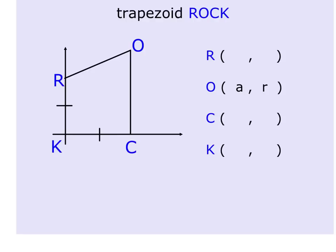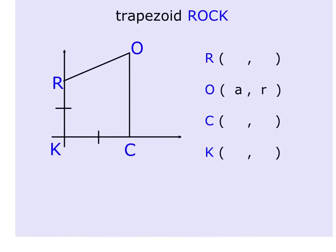So here we have trapezoid ROCK, and we are told that O up here is the point (a, r). Well, what that tells us is that the distance from here to here is a, and the distance up is r.